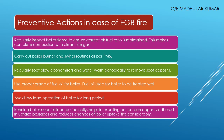Now we will see about the preventive actions for EGB fire. First, regularly inspect the boiler flame to ensure the correct air-fuel ratio is being maintained — this ensures perfect combustion and no carbon residue, giving clean flue gases. Carry out boiler burner and soot blowing routines as per the PMS to maintain perfect operational conditions and complete combustion, resulting in clean flue gases without soot. Regularly soot blow the economizer and water wash periodically to remove soot deposits — if deposition has already occurred, soot blowing or water washing will remove it.